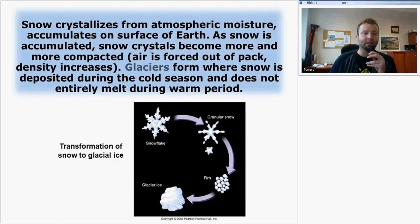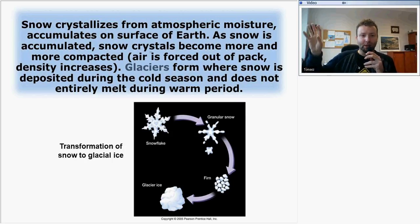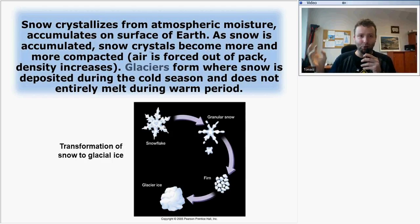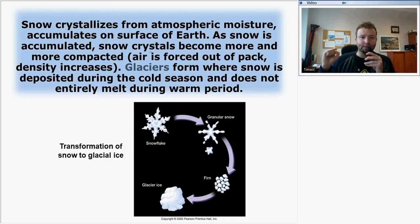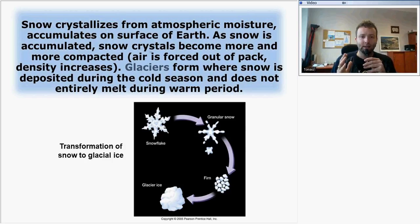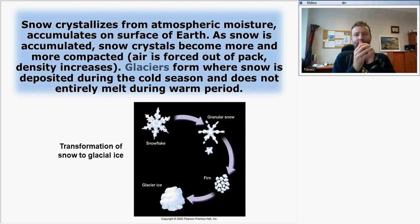From the chart, you can find the transformation of snow to glacial ice. From snowflake to glacier ice: snow crystallizes from atmospheric moisture, falls in the form of snowflakes, and accumulates on the surface of the Earth. As snow accumulates, snow crystals become more and more compacted because of the layers from above. These snow crystals are compacted so air is forced out from the pack and its density increases. If you make a snowball, you also compact the snow — you just push out the air.